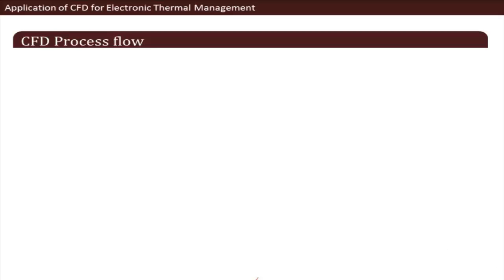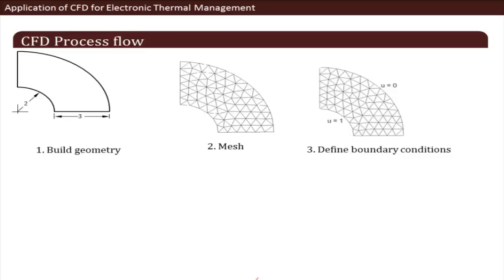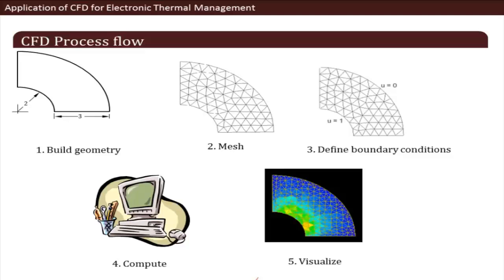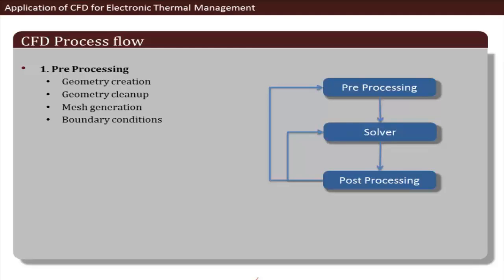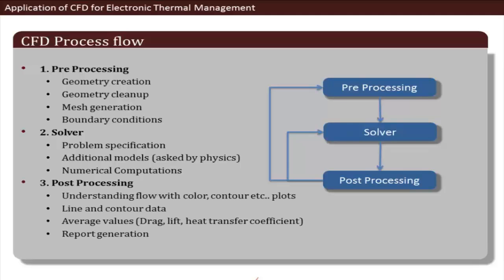The CFD process flow begins with building geometry using CAD tools or built-in geometry tools, then meshing the geometry using grid generation tools. After that, we define physical boundary conditions, compute the solution using solver software, and extract results. In short: pre-processing covers geometry creation, cleanup, mesh generation, and boundary conditions; the solver computes the numerics; and post-processing uses contours, colors, graphs, etc. to understand the flow.